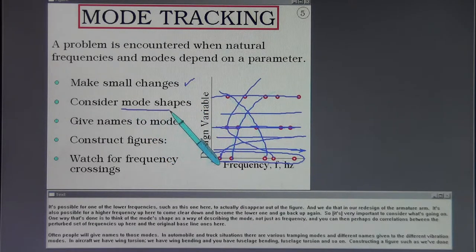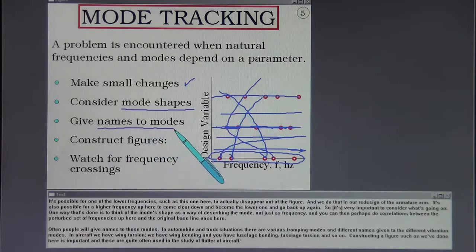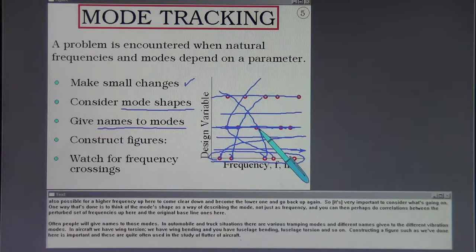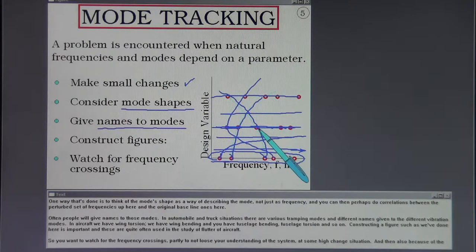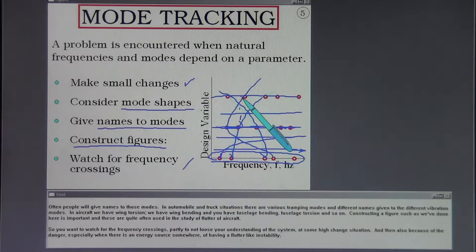One thing that's a worry is that the modes will cross as shown here. In non-conservative systems with fluid flow over a body, for instance, or with suitable controls that have instabilities, then sometimes these crossings can cause fluttering motion. So one way or the other you want to understand what these mode crossings are. A way to do that is to make relatively small changes in your parameters, so that you get cuts through the frequency spectrum at fine distances. It's possible for one of the lower frequencies to actually disappear out of the figure. Constructing a figure such as we've done here is important, and these are quite often used in study of flutter of aircraft. You want to watch for the frequency crossings partly to not lose your understanding of the system and also because of the danger of having a flutter-like instability.